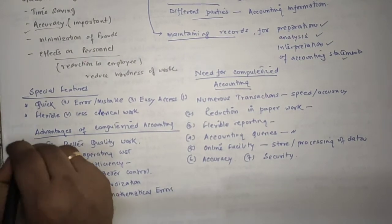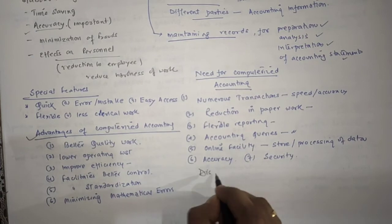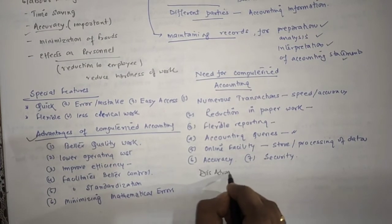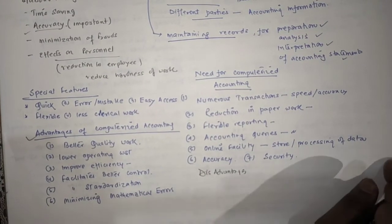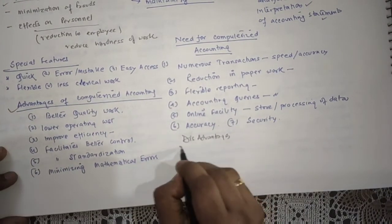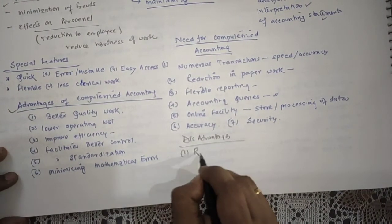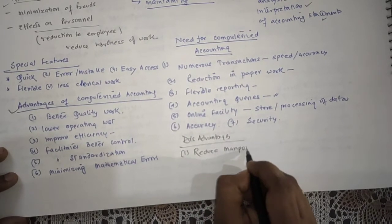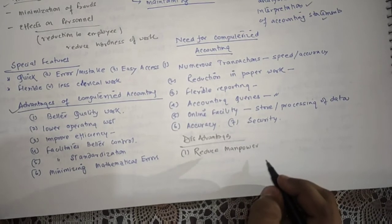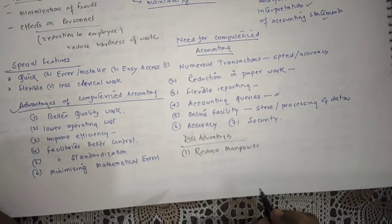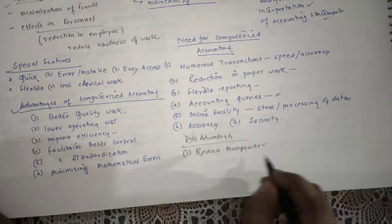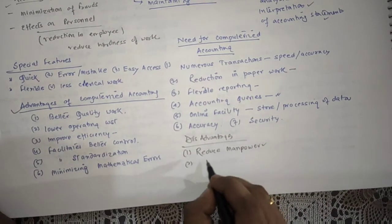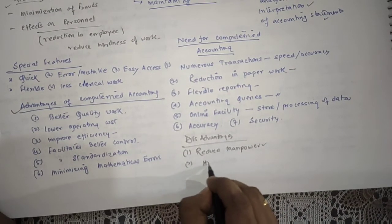As we know we have advantages, but there are some disadvantages also. Now what are the disadvantages? Number one, it reduces manpower. As we know that computer reduces human effort and human work; it also reduces manpower. Then maintenance of computerized accounting system is high in cost.